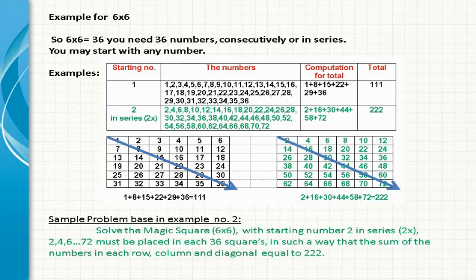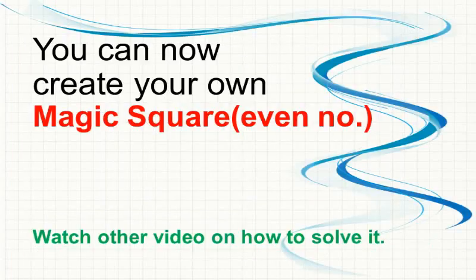Example for 6x6. So 6x6 gives you 36, we need 36 numbers, consecutively or in series. You may start at any number. Please take a look at the table for a lot of examples and how to get the sum or total. Based on the example you can make your own problem solving on Magic Square 6x6.